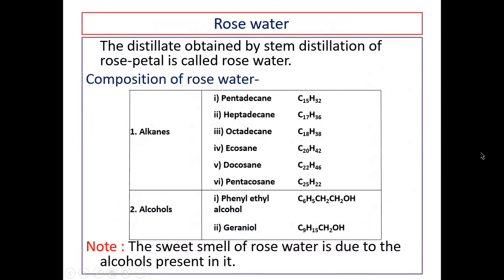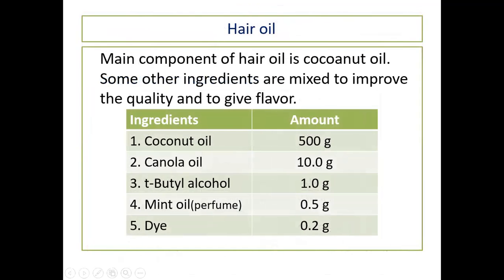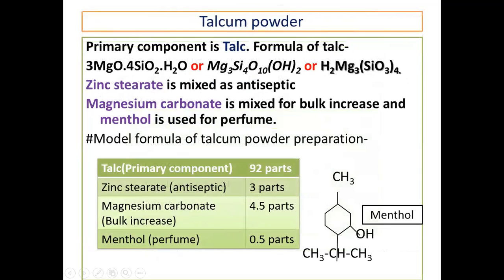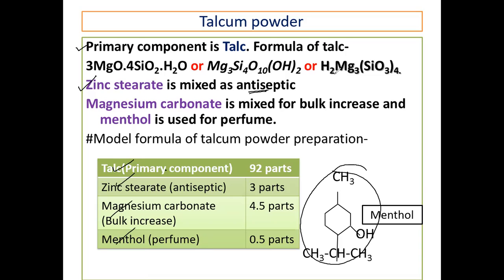This is the composition of rose water, and this is the composition of hair oil. This is talcum powder — the primary component of talcum powder is talc. This is the chemical formula of talc, and zinc stearate mixed in talcum powder acts as an antiseptic. Magnesium carbonate is mixed for bulk increase, and menthol is used for parfumeries. Here different types of composition are present, and this is the structural formula of menthol that is used in talcum powder.